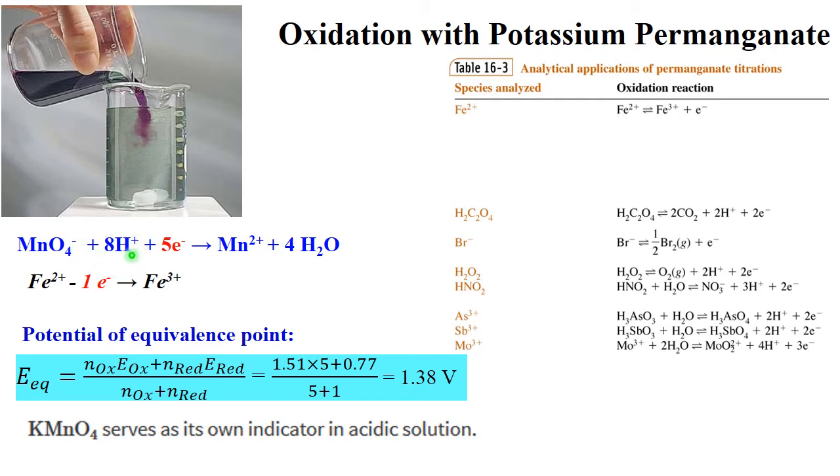MnO4- + 8H+, you need to run your reaction in one molar acid. Five electrons, making Mn2+, which is practically colorless, and water.